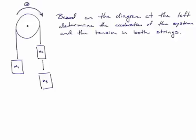We have three pieces, two connected on the right, one piece connected on the left, rolling over a massless and frictionless pulley. Our question asks us to determine the acceleration of the system and the tension in both strings.